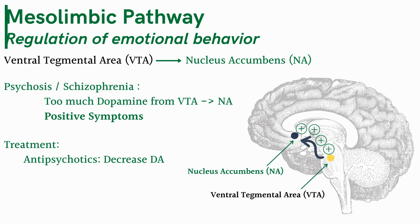The first pathway is the mesolimbic pathway. It regulates emotional behavior. Dopamine travels from the VTA, which is the yellow dot, to the nucleus accumbens, which is the blue dot. In patients with psychosis or schizophrenia, there is too much dopamine going from the VTA to the nucleus accumbens. This is when you see these patients present with positive symptoms — hallucinations, delusions, referential thinking, disorganized behavior, and grandiosity.